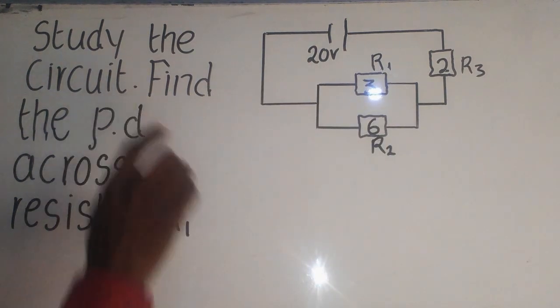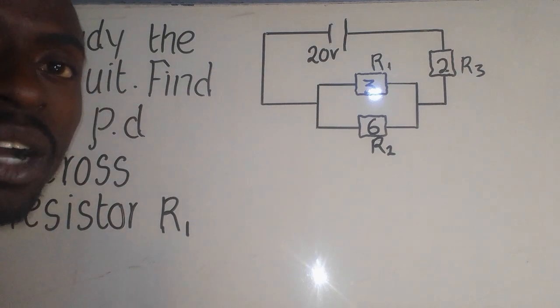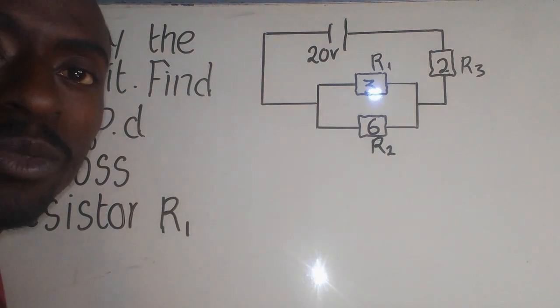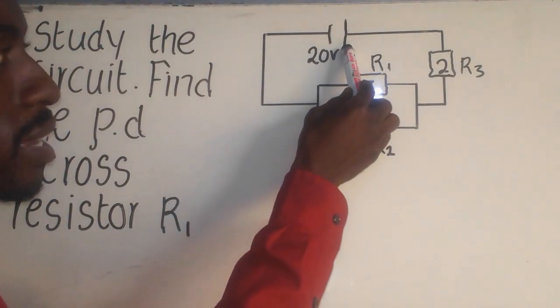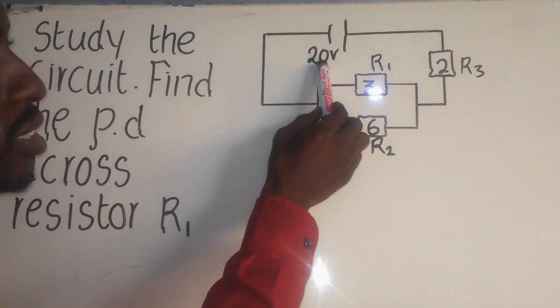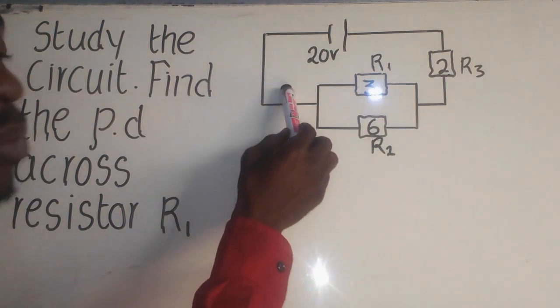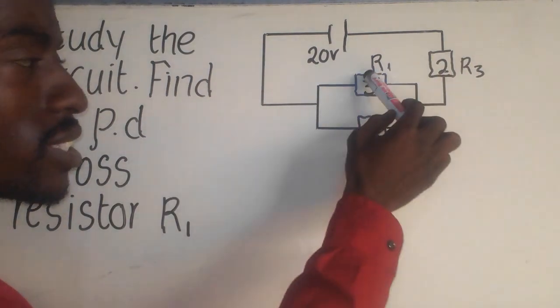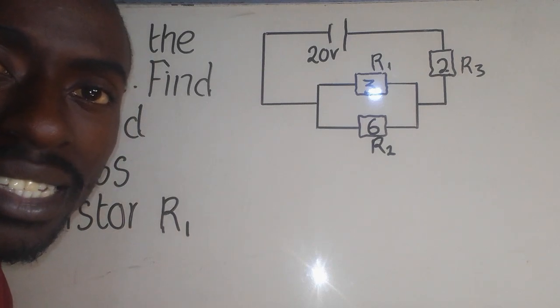When they say the circuit is a diagrammatical representation of the flow of electricity. Now, this circuit is made up of different components. This one you can see here, it is the batteries which are producing 20 voltage. This line, it is the wire where electricity flows. These three components are the resistors which are responsible for resistance here.